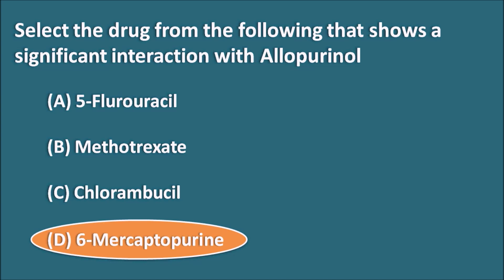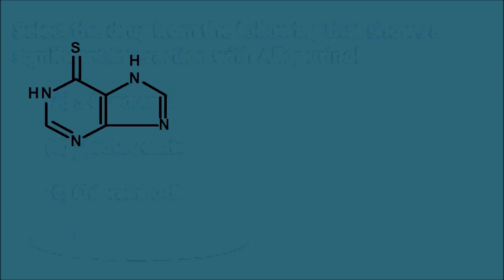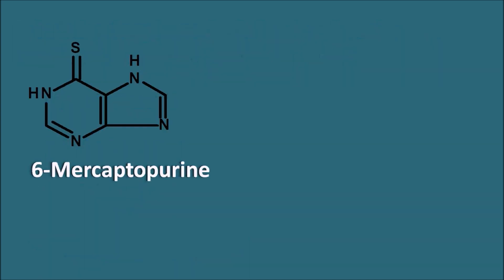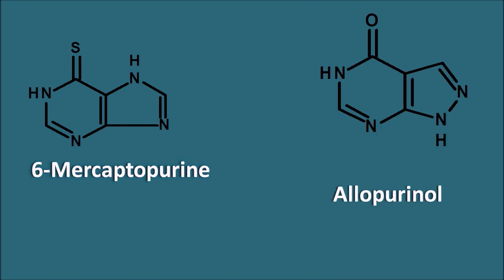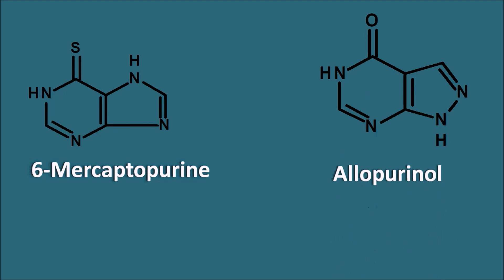At the same time, allopurinol can be given along with 5-fluorouracil — 5-fluorouracil can produce mouth ulcers which can be treated by allopurinol mouthwash. This is the structure of 6-mercaptopurine, which has a thio group at the sixth position. This is the structure of allopurinol. Both structures are similar — 6-mercaptopurine has a thio group at position 6, but allopurinol has a carbonyl group at position 6. Because of this structural similarity, there is an interaction between the two drugs.